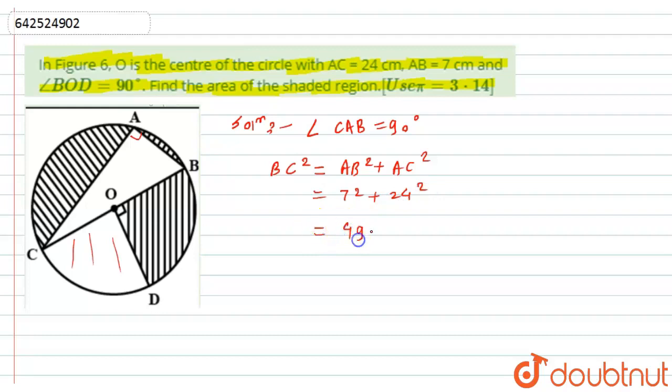Now, here I will get the value as 625. Now, 625 is the square of 25. So, here I will get the value of BC as 25.